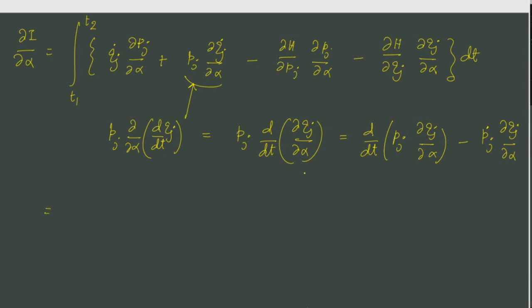So we replace the second term by these two terms. And you see the integration involving the total time derivative of this product is straightforward. We just have to evaluate this quantity Pj and del Qj del alpha at the end points.